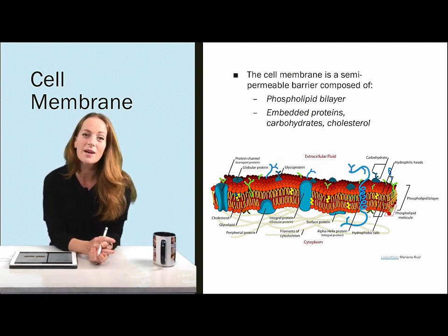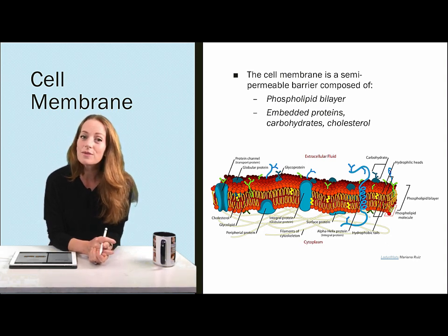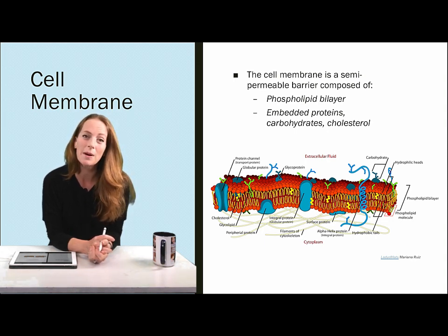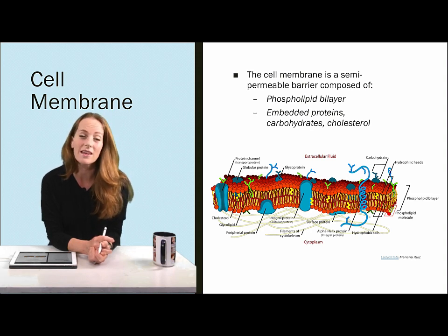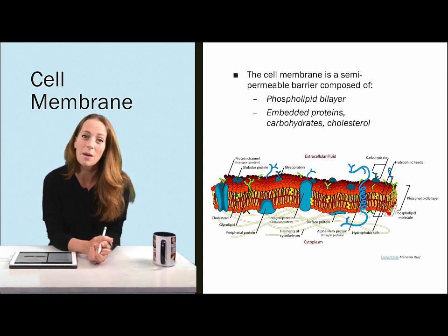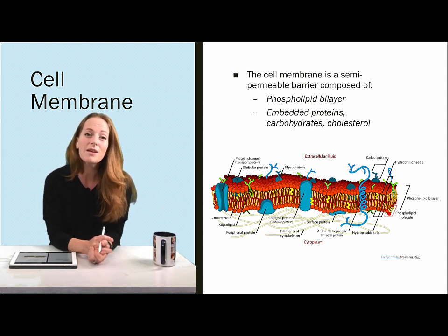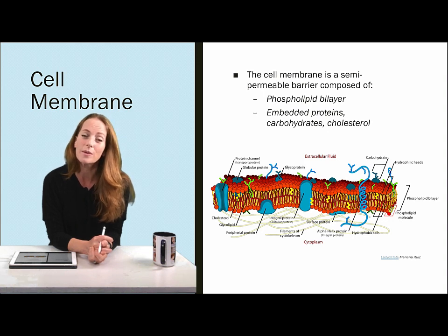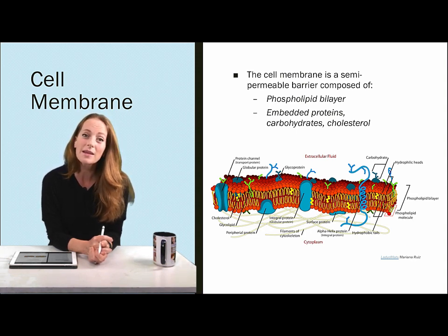In our cells lecture, we talked about the different organelles and also the structure of the plasma membrane. Let's review the structure of the plasma membrane here. Remember that the plasma membrane is a semi-permeable barrier, meaning that not everything is able to get across this membrane. It's composed primarily of phospholipids, but it also includes other important molecules — many different types of proteins, carbohydrates, which make glycoproteins and glycolipids, also cholesterol and other important lipids.